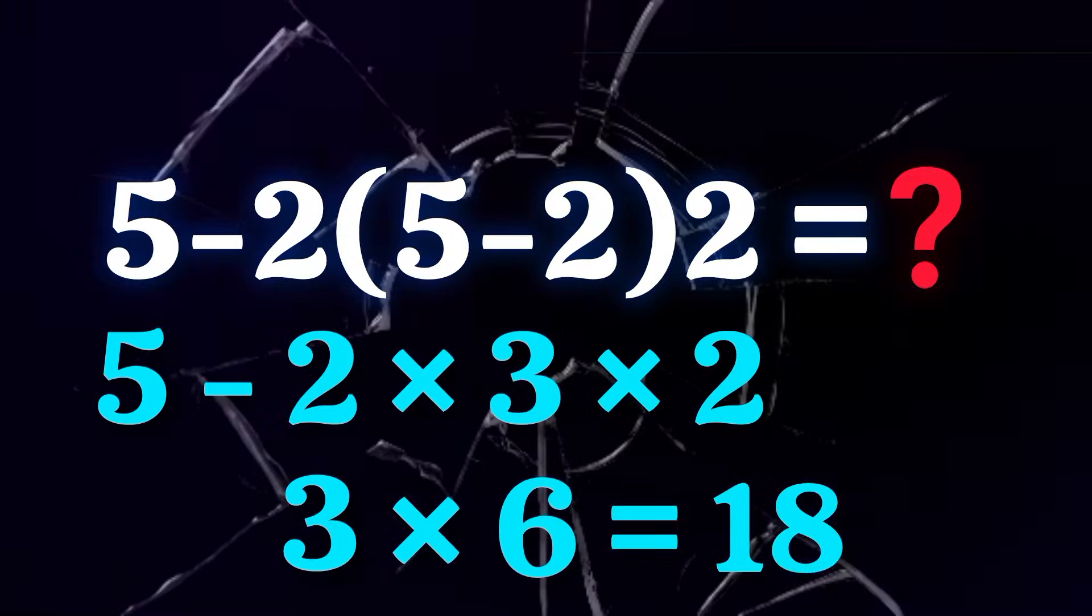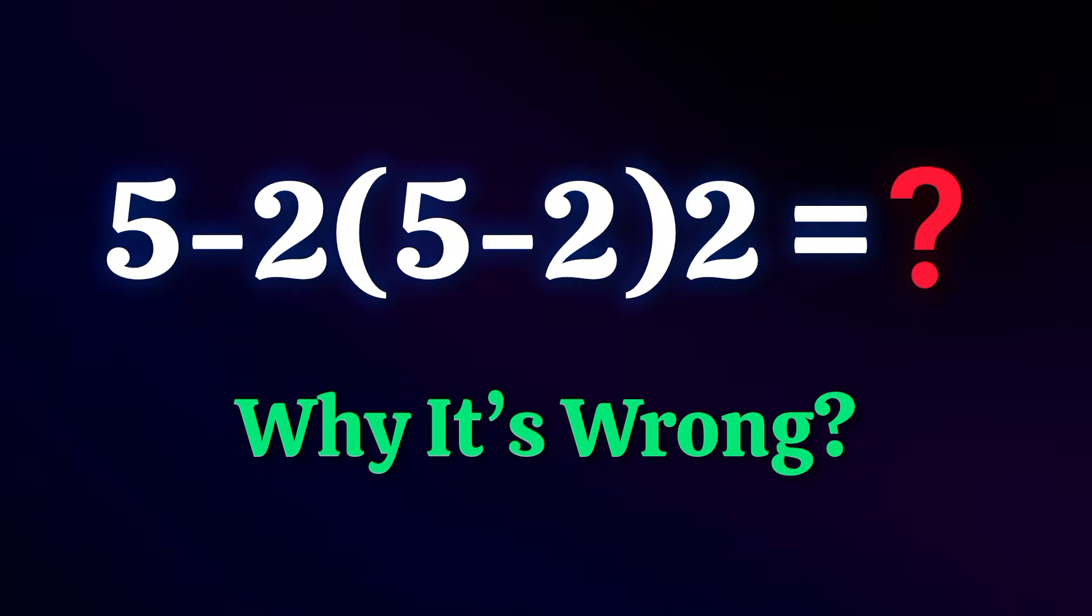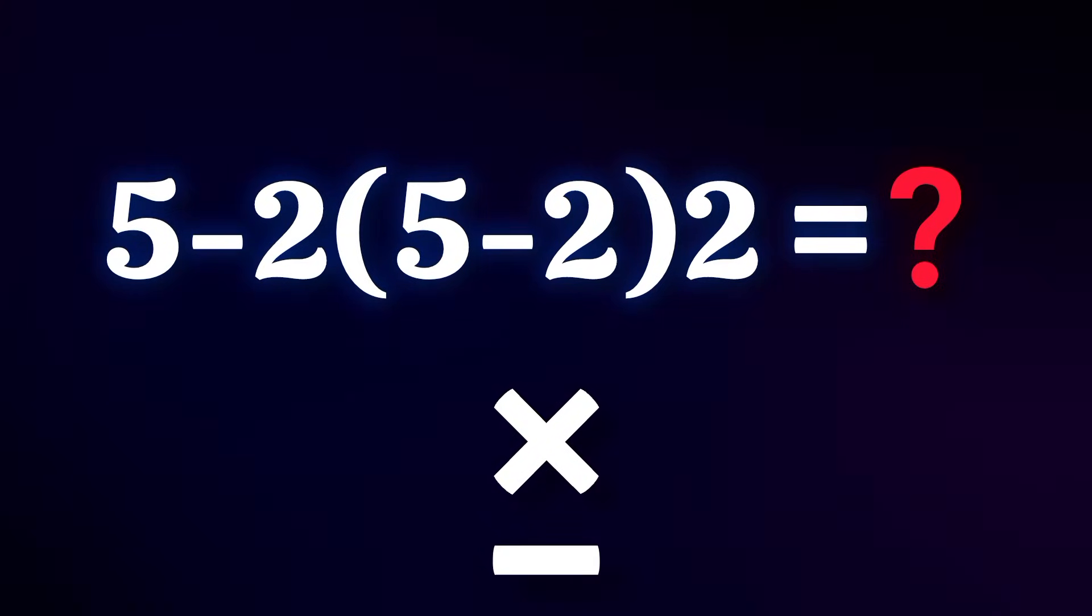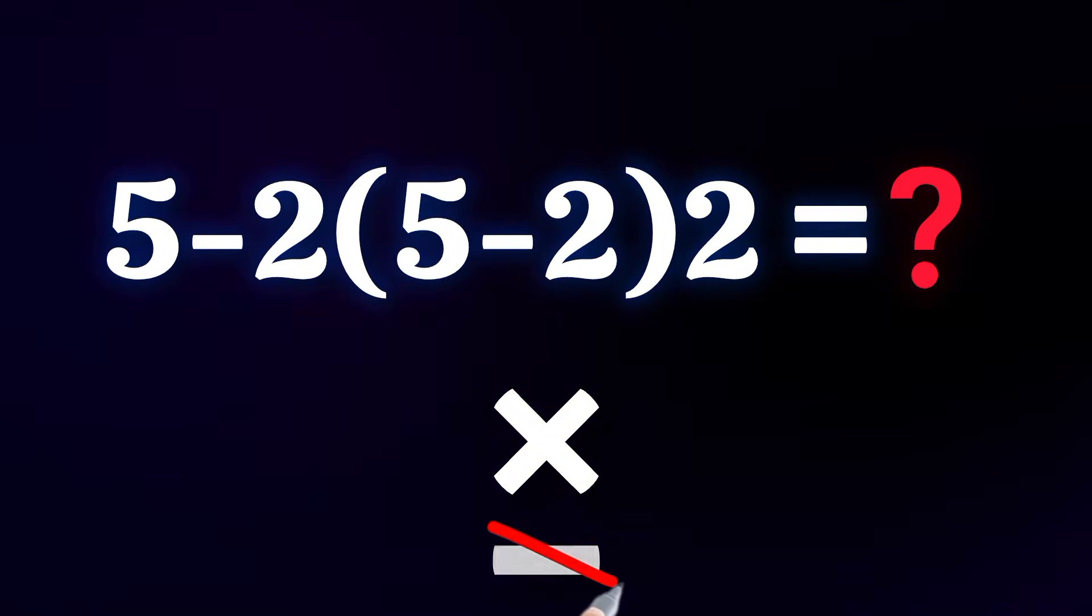Looks logical, feels fast, but completely wrong. Here's why it's wrong. Multiplication has higher priority than subtraction. You cannot subtract first. Order matters.